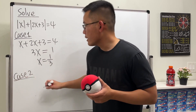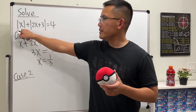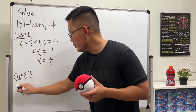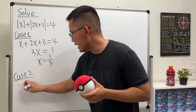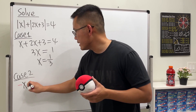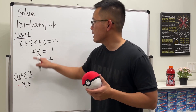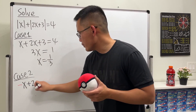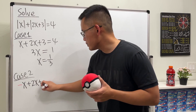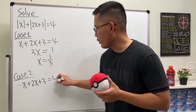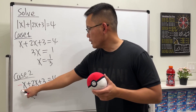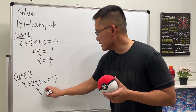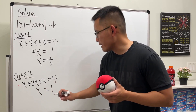Case 2: negate the first term. Taking out the absolute value gives us negative x, then keep the second part positive: plus 2x plus 3 equals 4. This gives us x minus 3 on both sides equals 1, so x equals 1.